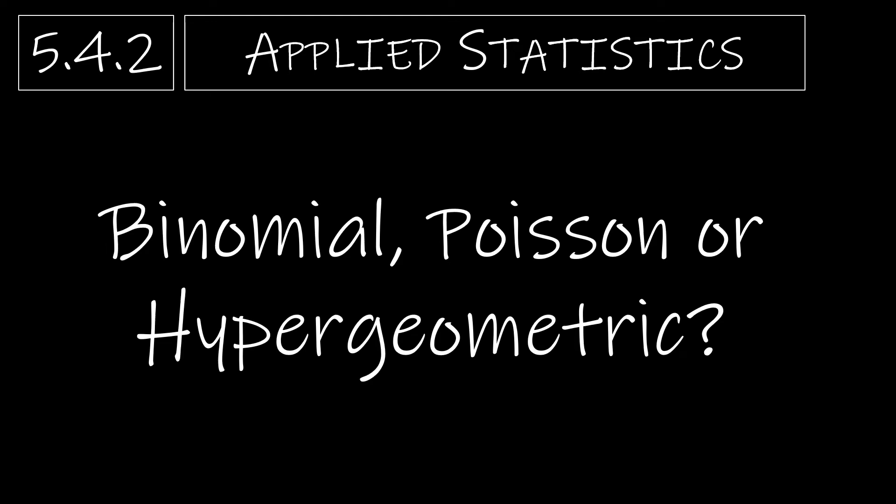We're going to finish up Chapter 5 with just a quick review of the binomial, Poisson, and hypergeometric distributions and when each of those should be used.